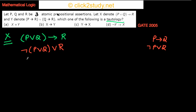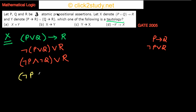Now we apply De Morgan's law. 'Not (P or Q)' becomes 'not P and not Q.' So the expression becomes: (not P and not Q) or R. Then we distribute R over the 'and,' giving us: (not P or R) and (not Q or R).